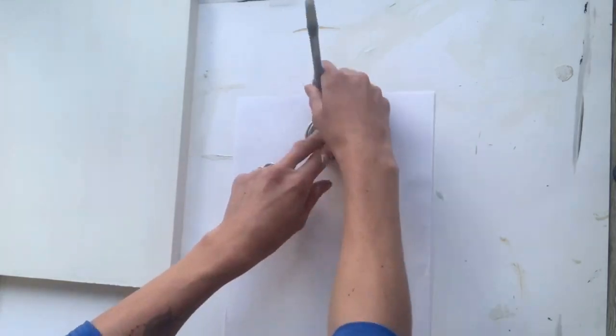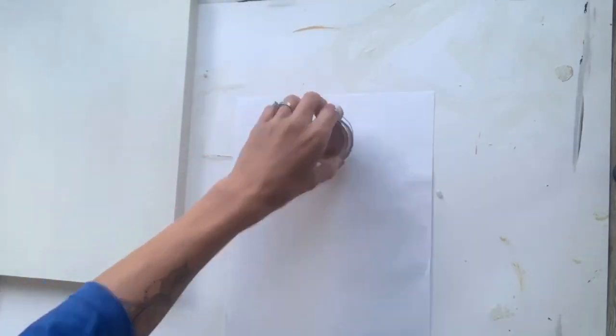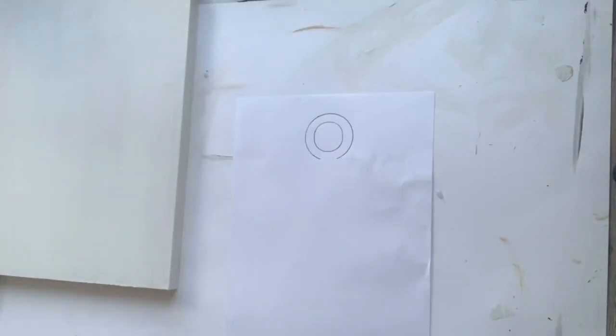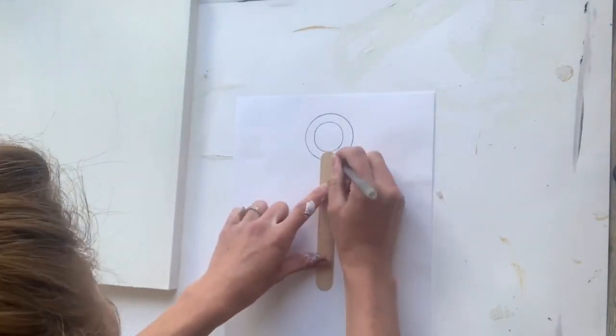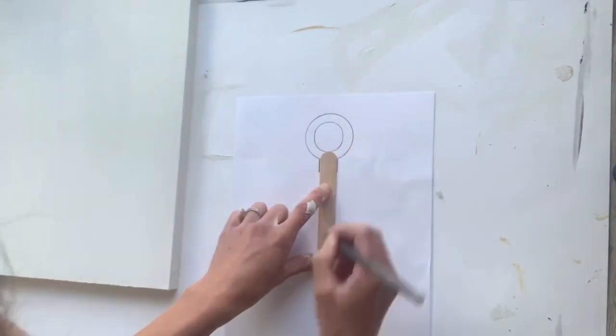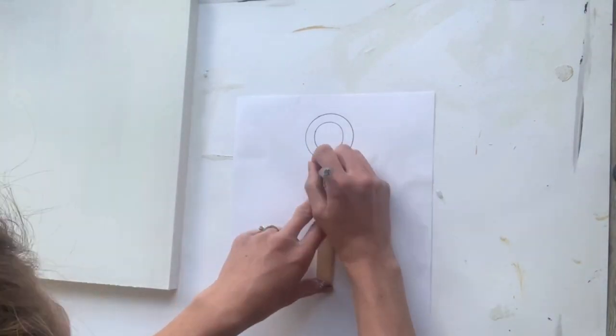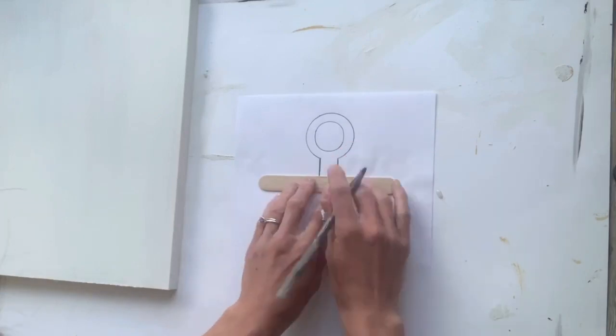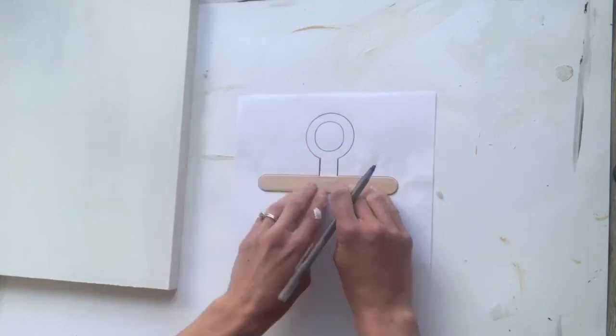I just gathered some knickknacks from around the house and I started with a big circle and a smaller circle and just outlined them. Now, I'm not that great at drawing so I decided to use these items to help me get my design I was looking for.